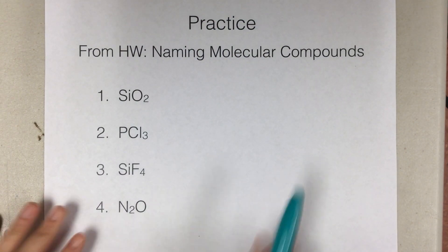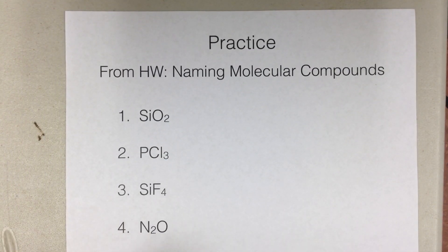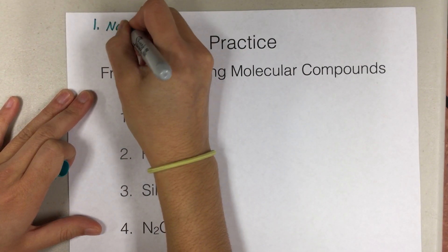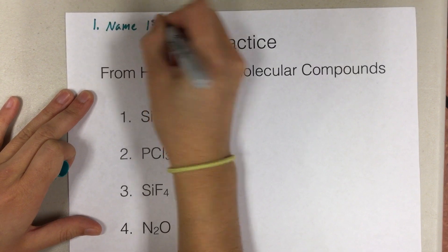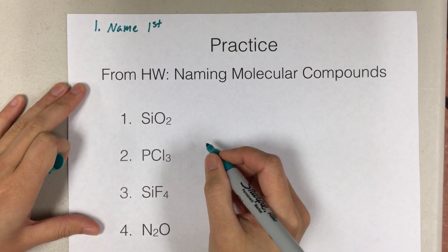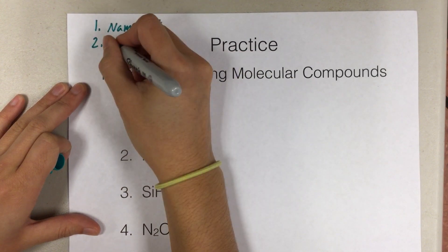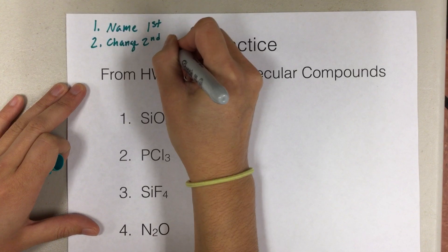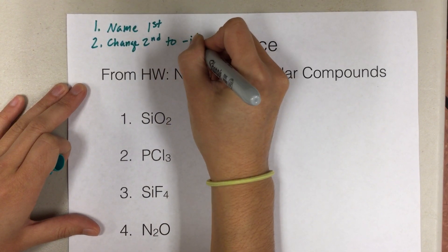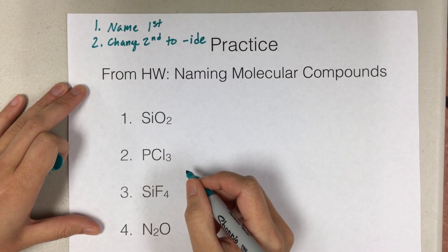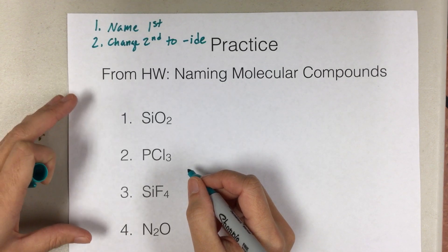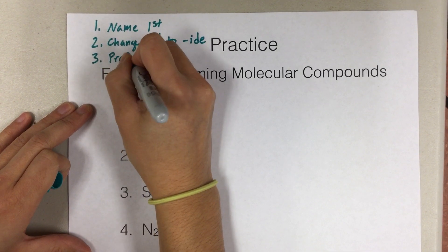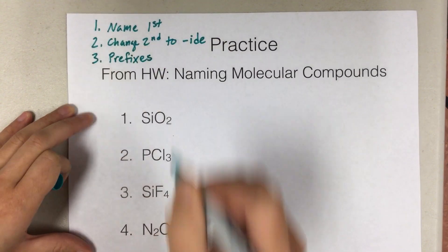Okay, so to do this we just have to follow three easy steps. The first step is you need to name the first element. So you just have to name the first one. Second, you have to change the second element to an -ide ending, which we'll see when we do some examples. So name the first, change the second to -ide, and then third we need to use prefixes, which we'll also explain.